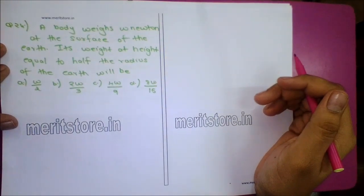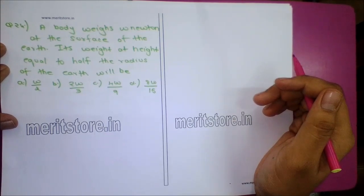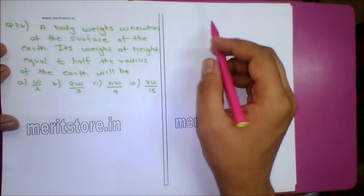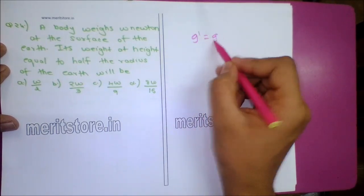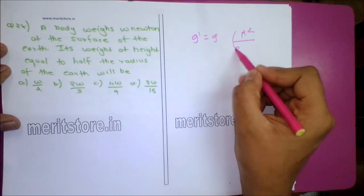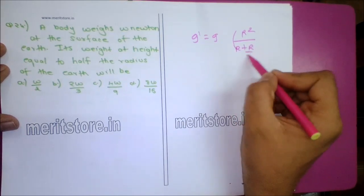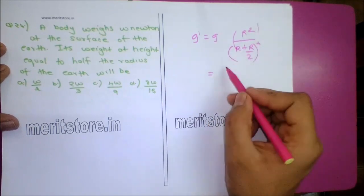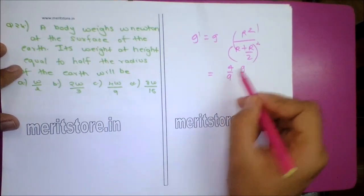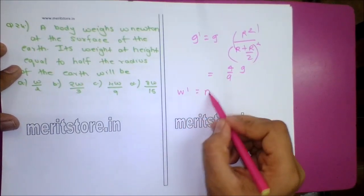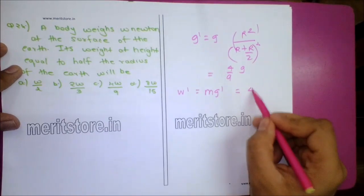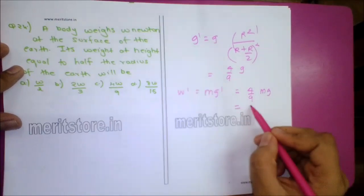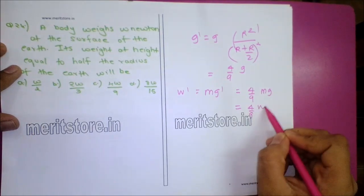Question 24: A body weighs W Newton on the surface of the Earth. Its weight at height equal to half the radius of the Earth will be: g' = gR²/(R + R/2)² = (4/9)g. W' = mg' = (4/9)mg = (4/9)W. Option C, 4W/9, is the correct answer.